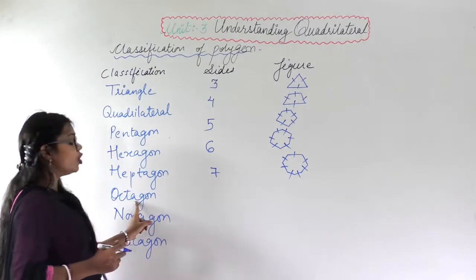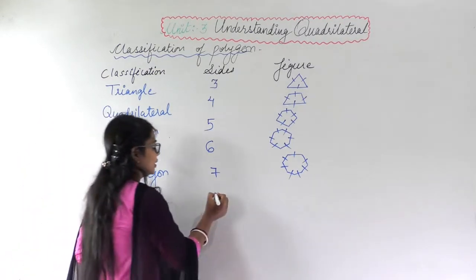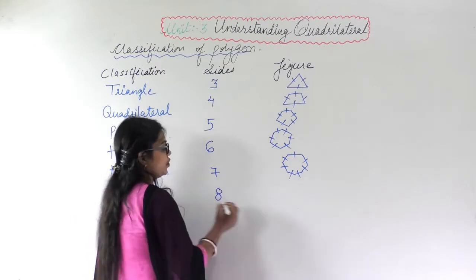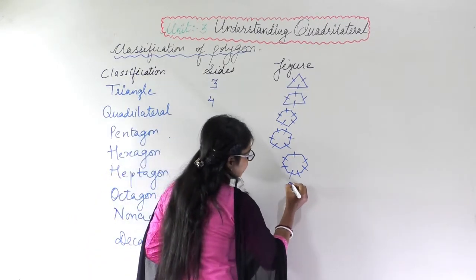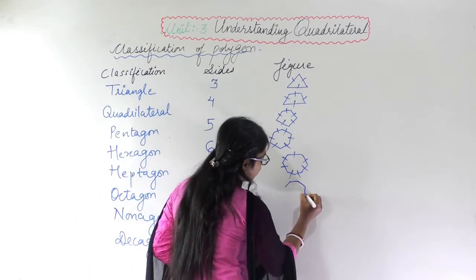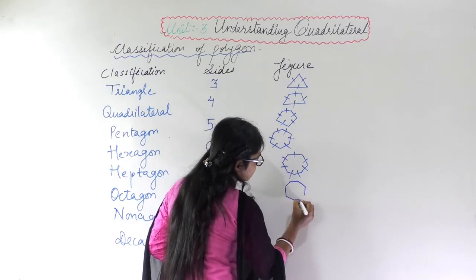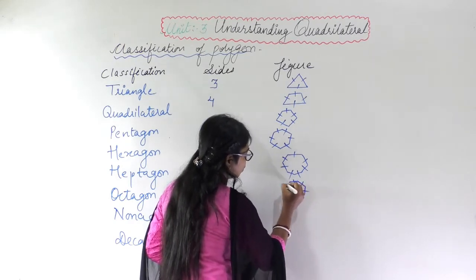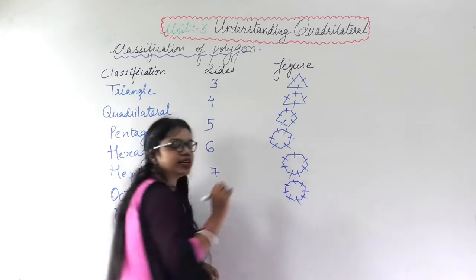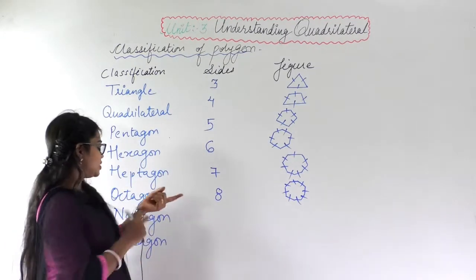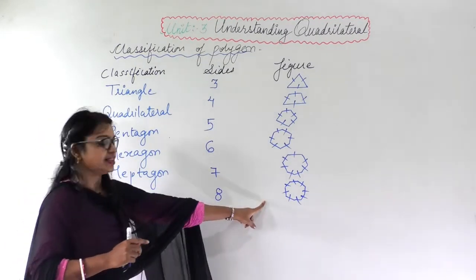Similarly, 'octa' — the word octa means eight. It will have eight sides — one, two, three, four, five, six, seven, eight. So the word octa means eight, and an octagon has eight sides.